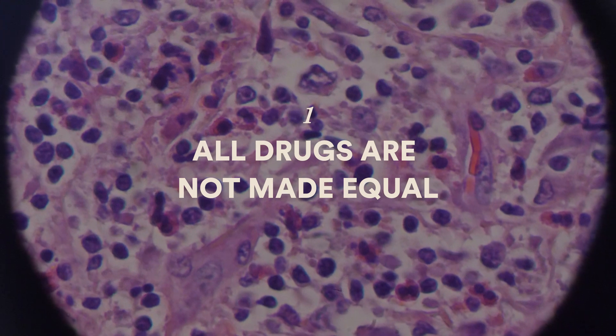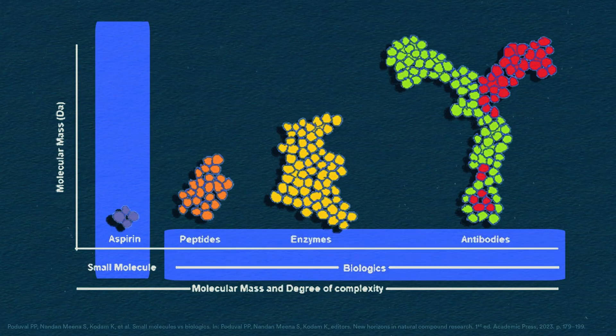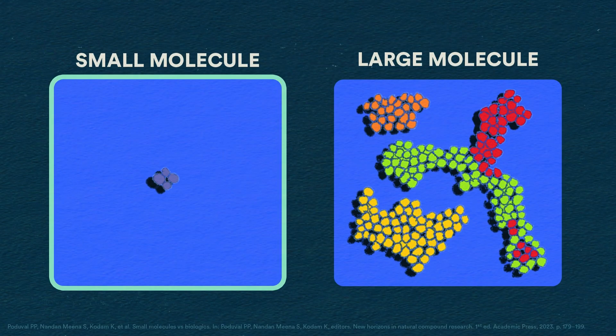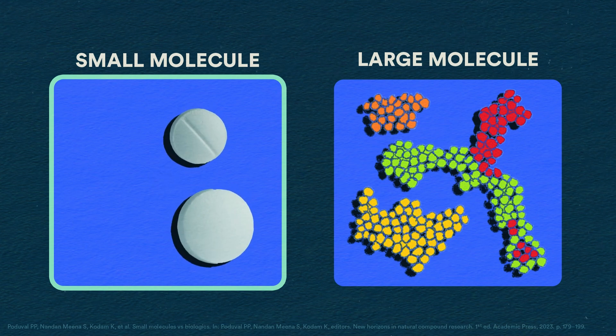There are two major categories of drugs: small molecule and large molecule. You're probably more familiar with small molecule medications. These are drugs like allergy medicine, aspirin, and painkillers.